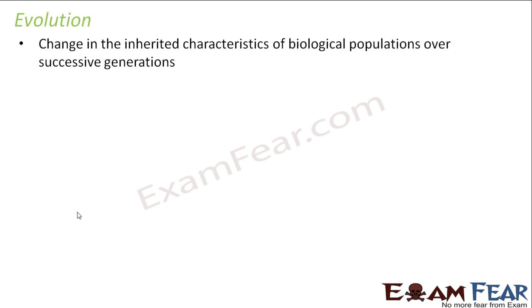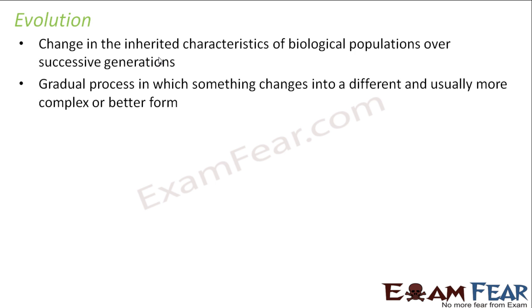So with this small introduction on variation, let us see what exactly is evolution. Evolution is the change in the inherited characteristics of biological populations over successive generations. That means the characteristics which are inherited from parents change over successive generations. Evolution will not happen in a generation or two — it will happen only after several generations. As in the amoeba example, in the first generation the only change was a slightly longer arm, but with successive generations the changes seen will be more. Over a due course of time, the change may be so vast that it gives rise to a new organism altogether. So evolution is a gradual process in which something changes into a different and usually more complex or better form.